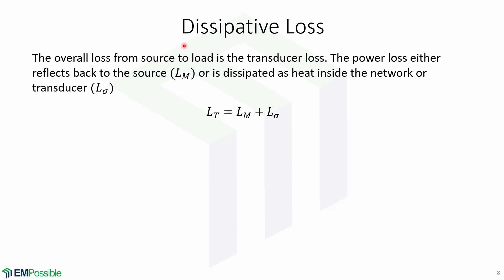Dissipative loss: the overall loss from the source to the load is the transducer loss. The power loss either reflects back to the source, which is LM, or is dissipated as heat inside the network or transducer, which is L sigma. Therefore, the dissipative loss LT is equal to the power loss reflecting back to the source plus the dissipated heat inside the network: LM plus L sigma.